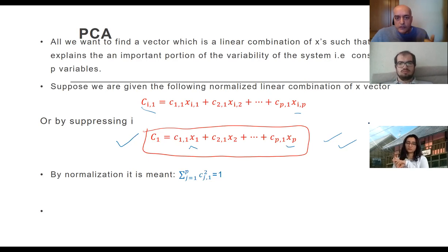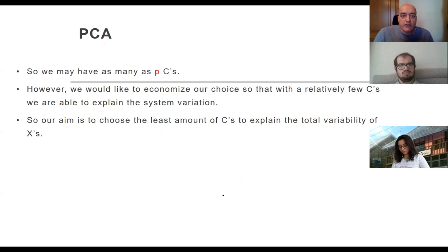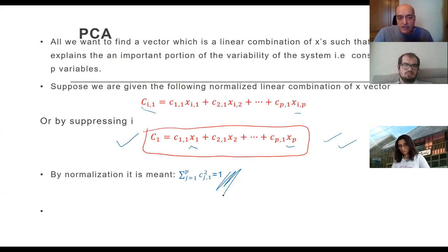That C1 is one of the variables I would like to use as an explanatory variable for the whole X vector. But of course, C1 is going to be only one vector. I might need more than C1 - C2, C3 - to see a good portion of this X variability. But I have this normalization condition, which is a fair thing to do because otherwise they have to be comparable and you might end up with some very vague result.